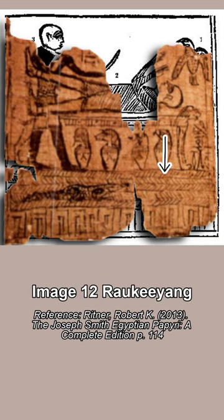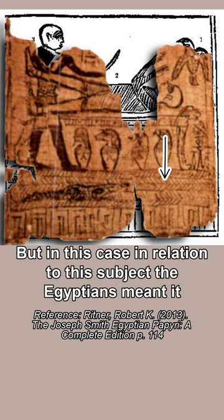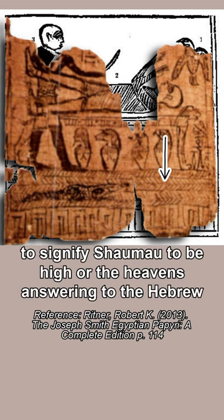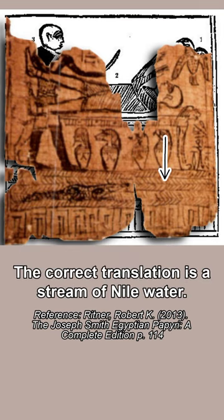Image 12: Smith's translation is 'Rakyong, signifying expanse or the firmament over our heads, but in this case, in relation to this subject, the Egyptians meant it to signify shamao, to be high, or the heavens, answering to the Hebrew word shamahim.' The correct translation is simply a stream of Nile water.